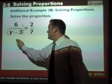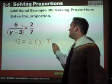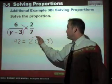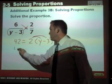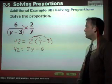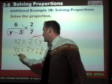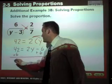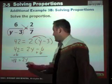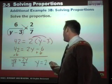So six times seven is forty-two, equals two times y minus three. And now distribute the two, you have forty-two on this side, equals two y minus six. Add six to both sides, and you get forty-eight equals two y. And when you divide by two, you get y equals twenty-four.